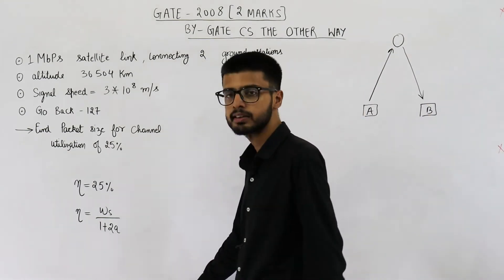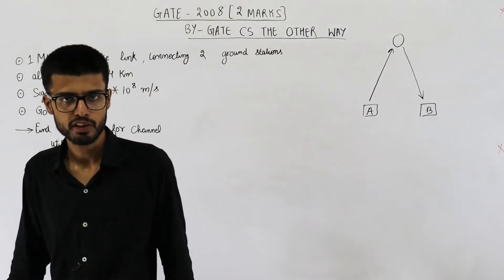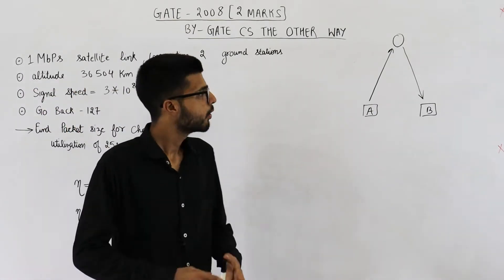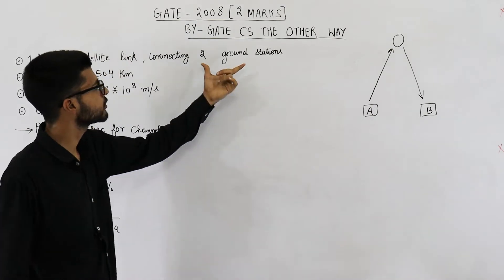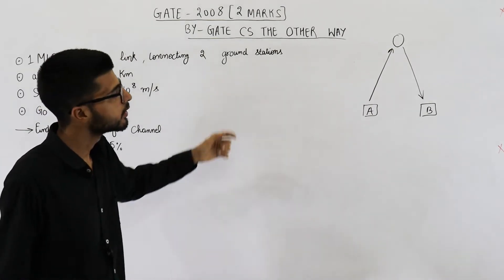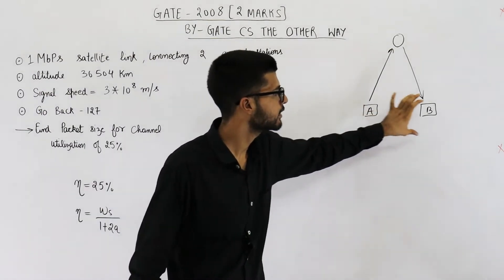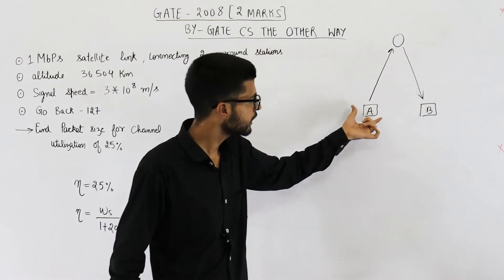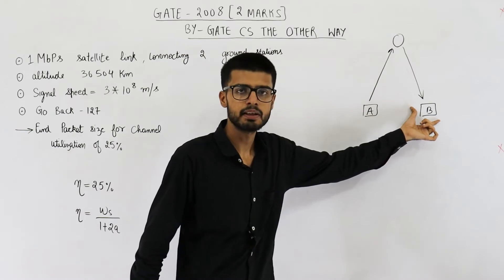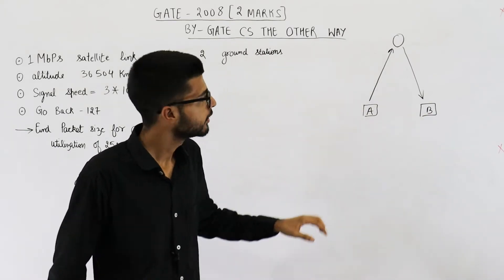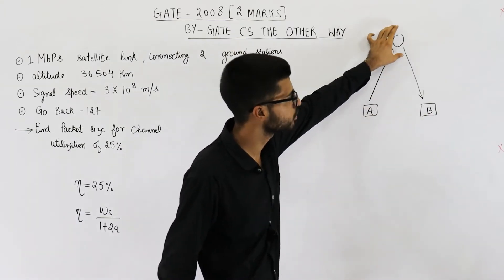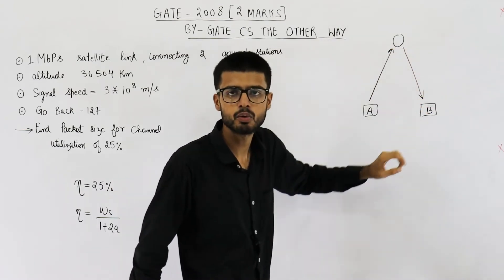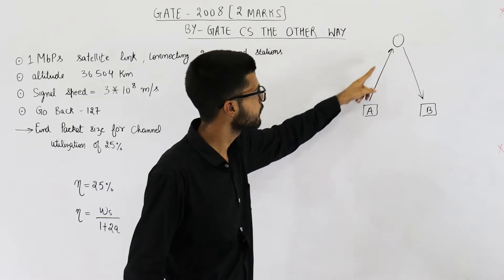So they are saying channel utilization must be 25%. That means we want efficiency to be 25%. Also, the communication is between two ground stations. Let us call them station A and station B. They are connected via a satellite link. That means whenever A wants to send some data to B, it cannot directly send. That data will first be sent to some satellite. Then that satellite is going to forward that data to B. So data is traveling like this.